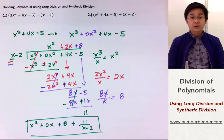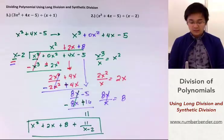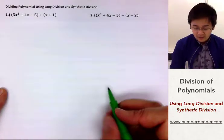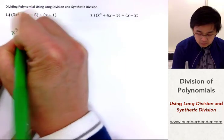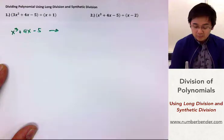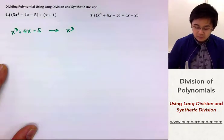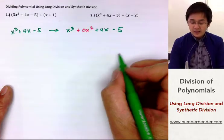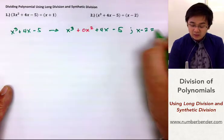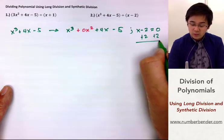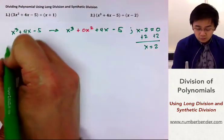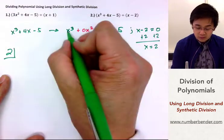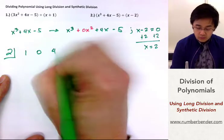Our quotient for the second problem is x squared plus 2x plus 8 plus 11 over x minus 2. Now, to use synthetic division, just like we did in the first step, we replace the missing x squared term with 0x squared. So we have x cubed plus 0x squared plus 4x minus 5. Since we are dividing by x minus 2, we equate to 0, giving us 2 as our synthetic divisor. We write out the coefficients of the polynomial: 1, 0, 4, and negative 5.